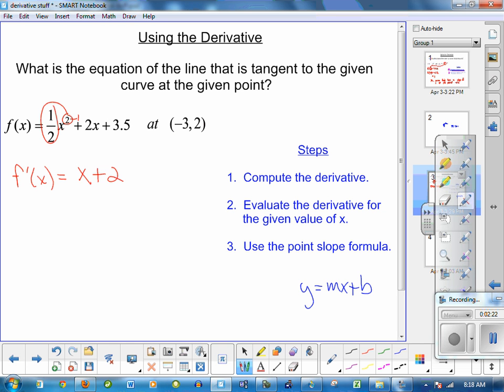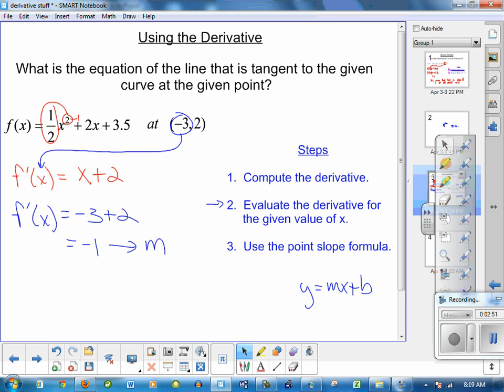So we have a device now that will compute the slope if we know x values. The good news is I do know an x value. I'm going to take this x value like it says in step 2 here and evaluate the derivative for the given value of x. So I've got f'(-3) = -3 + 2, which is equal to -1. This is my m value for my y = mx + b.